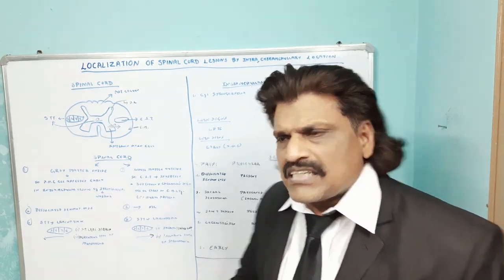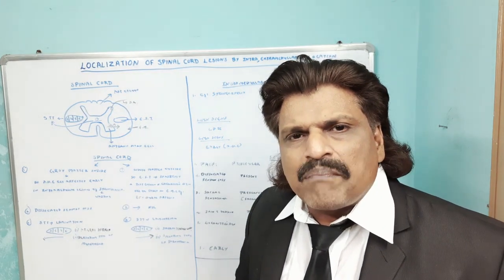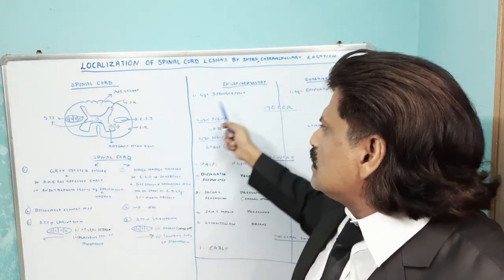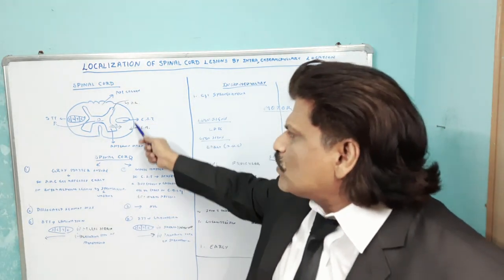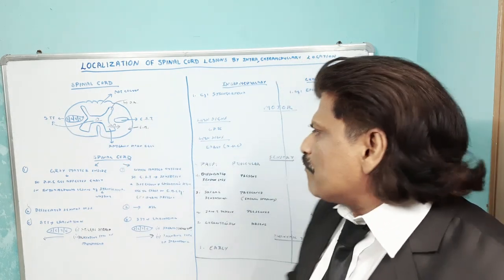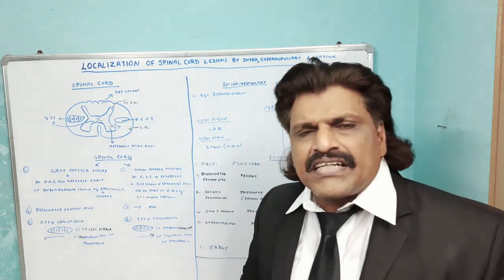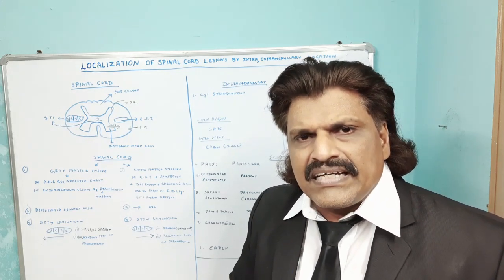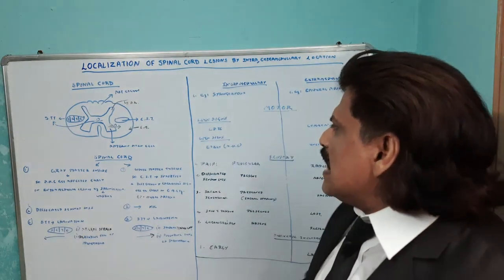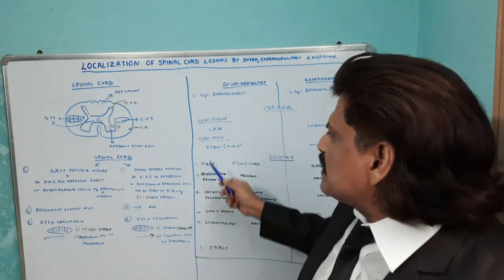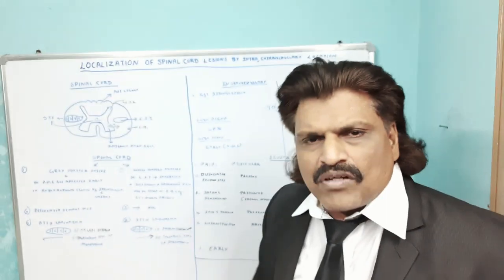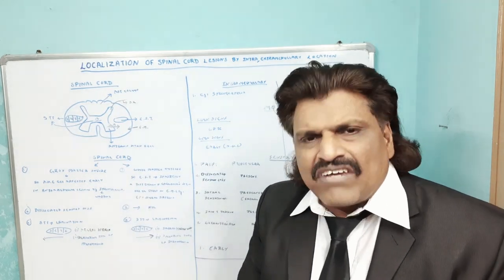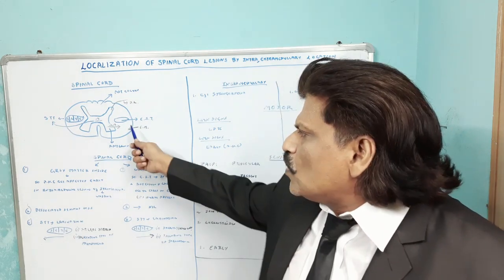Now let's see the differences between intramedullary and extramedullary lesions in detail. Intramedullary lesion — classic example syringomyelia — involves a cavity in the center of the spinal cord. Extramedullary — classic example epidural abscess — comes from outside and compresses the cord. Regarding motor disturbances: intramedullary lesions first affect the anterior horn cells — the gray matter — causing severe wasting. UMN signs are affected only later.